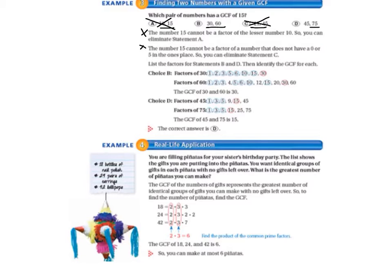And choice D, factors of 45, are listed here. And they've circled the common factors in blue and circled the greatest common factor in red. And the greatest common factor here is 15. So the greatest common factor of 45 and 75 is 15, and that's what we're looking for up here in the question. So the correct answer is D.